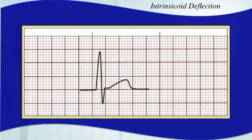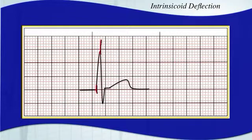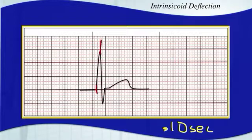So the intrinsicoid deflection — what is that? The intrinsicoid deflection is the measurement that begins at the beginning of the QRS complex and ends at the peak of the R wave. It's that very first deflection. It should be no longer than 0.10 seconds or 100 milliseconds, which is roughly equal to two and a half small boxes. If it's longer than that, it's an indication of a ventricular arrhythmia.